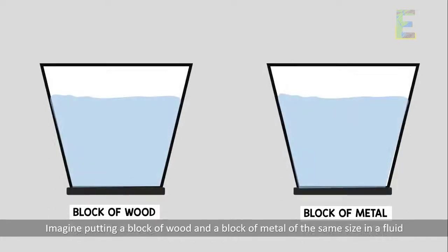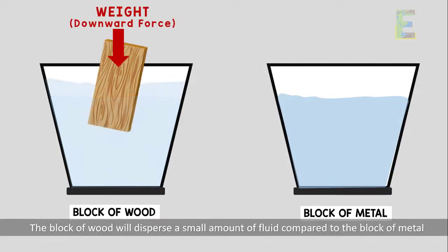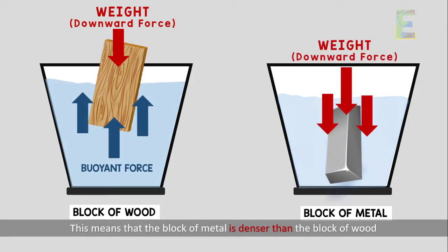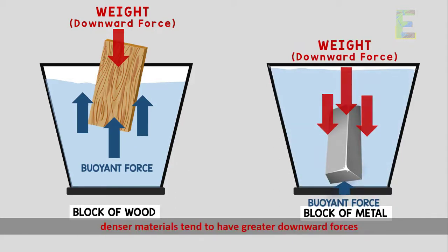Imagine putting a block of wood and a block of metal of the same size in a fluid. The block of wood will disperse a small amount of fluid compared to the block of metal. This means that the block of metal is denser than the block of wood. And denser materials tend to have greater downward forces.